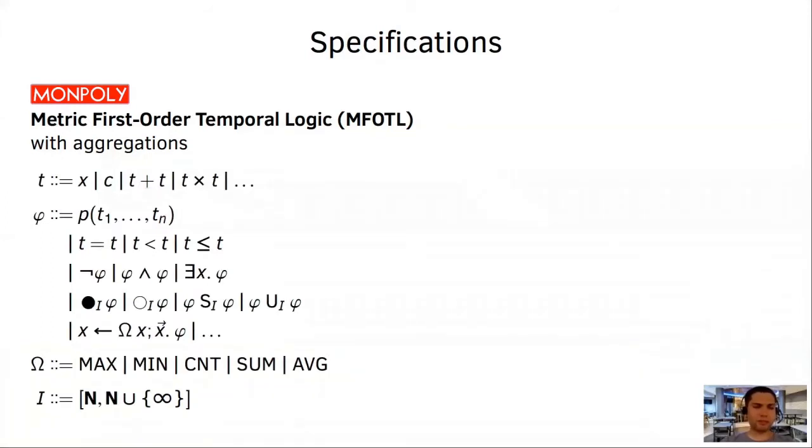Let me briefly show you its features using its syntax. So, you may recognize the temporal operators from LTL, which is next, previous, since, and until. As you can see, we both have past and future versions of them. The temporal operators also carry these intervals, which you can use to restrict the range of the operators in time. mFOTL is interpreted over first-order structures. That means that the events can carry data or parameters, and we can quantify over this data. Monpoly also supports aggregations, such as maximum, minimum, count, and so on, similar to those that you have in SQL.